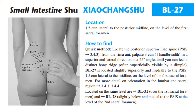Location: Bladder 27 is 1.5 cun lateral to the posterior midline on the level of the first sacral foramen. Quick method: locate the posterior superior iliac spine, palpate 3 cun in a superior and lateral direction at a 45-degree angle until you feel a distinct bony ridge, often superficially visible by a dimple. Bladder 27 is located slightly superiorly and medially to the PSIS, 1.5 cun lateral to the midline on the level of the first sacral foramen. Located on the same level is Bladder 31 over the first sacral foramen, and Bladder 28 is slightly below and medial to the PSIS at the level of the second sacral foramen.